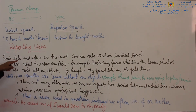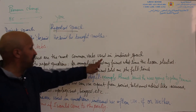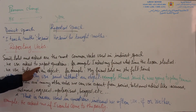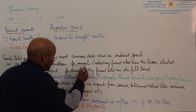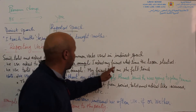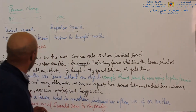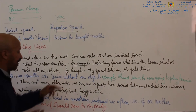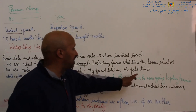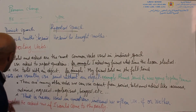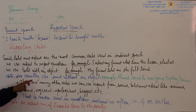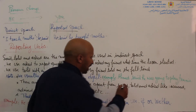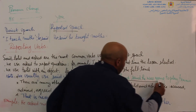Reporting verbs: 'said', 'told', and 'asked' are the most common verbs used in reported speech. We use 'asked' to report questions — for example, I asked my friend what time the lesson started. We use 'told' with an object — for example, my friend told me she felt tired. Note: we usually use 'said' without an object — for example, Ahmed said he was going to play tennis.